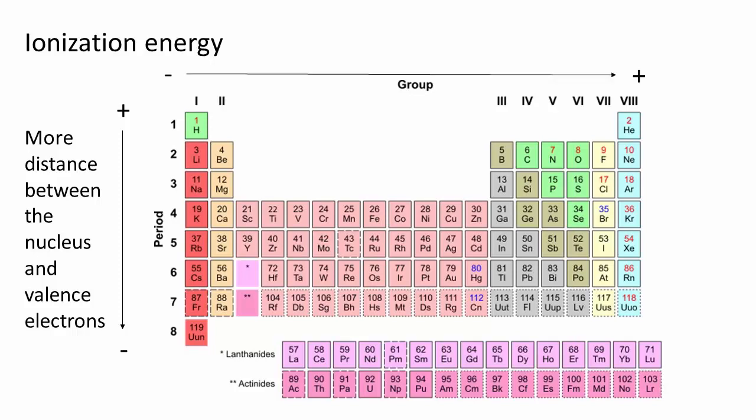As we go from left to right in a period, the ionization energy tends to increase as the effective charge increases and the electron is more tightly pulled towards the nucleus.